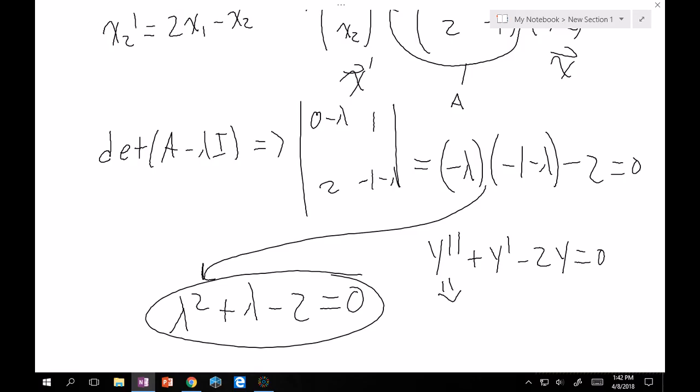So if we translate into this characteristic equation, where we just, remember, replace derivatives of y with the corresponding power of lambda. So y double prime goes to lambda squared, plus y prime is plus lambda, and then minus 2y is just minus 2. These are the exact same characteristic equation, as they should be.